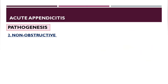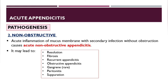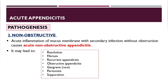In non-obstructive appendicitis, acute inflammation of the mucous membrane with secondary infection occurs without obstruction — this is catarrhal appendicitis. It may lead to resolution or fibrosis, recurrent appendicitis, or in rare cases, progress to obstructive appendicitis, gangrene, peritonitis, and suppuration.